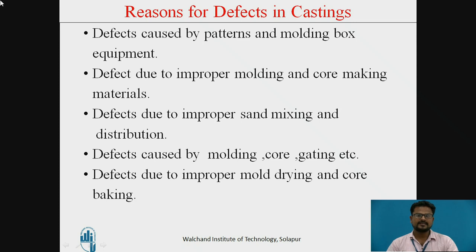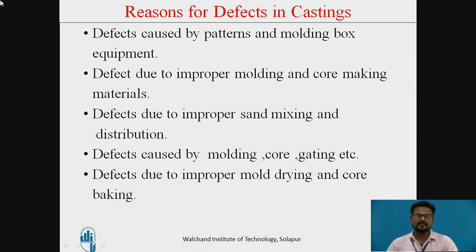Defects caused by molding, core, and gating systems include cold lapse and misrun. If molten metal is too cold or the casting section is too thin, the entire mold cavity may not be filled during pouring before the metal starts solidifying, resulting in a misrun. Causes include too cold molten metal, too thin casting section, too small gates, and metal lacking in fluidity. Slag holes are also a defect in this category — they are smooth depressions on the surface of the casting, usually occurring near the ingates. Additionally, shrinkage defects occur when metal shrinks as it solidifies and this is not compensated for by providing risers.